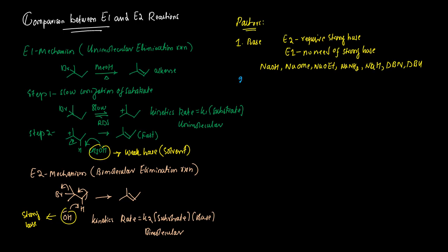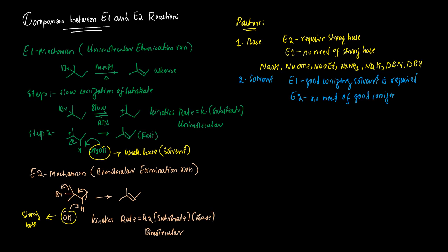The second factor is solvent. For E1, a good ionizing solvent is required, because the first step is slow ionization of the substrate and a good solvent ionizes the substrate swiftly. Therefore, a good ionizing solvent is required in E1 but not in E2.